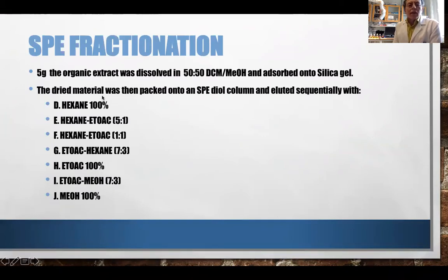How to do that? We take 5 grams of the organic extract, dissolve it in 1:1 DCM-methanol, and then absorb it onto silica gel. Use the dried material for dry packing into an SPE-diol column and then elute it with hexane 100%, then increase the polarity with ethyl acetate 5:1, 1:1, 7:3, pure ethyl acetate, then ethyl acetate-methanol 70:30, and finally pure methanol.